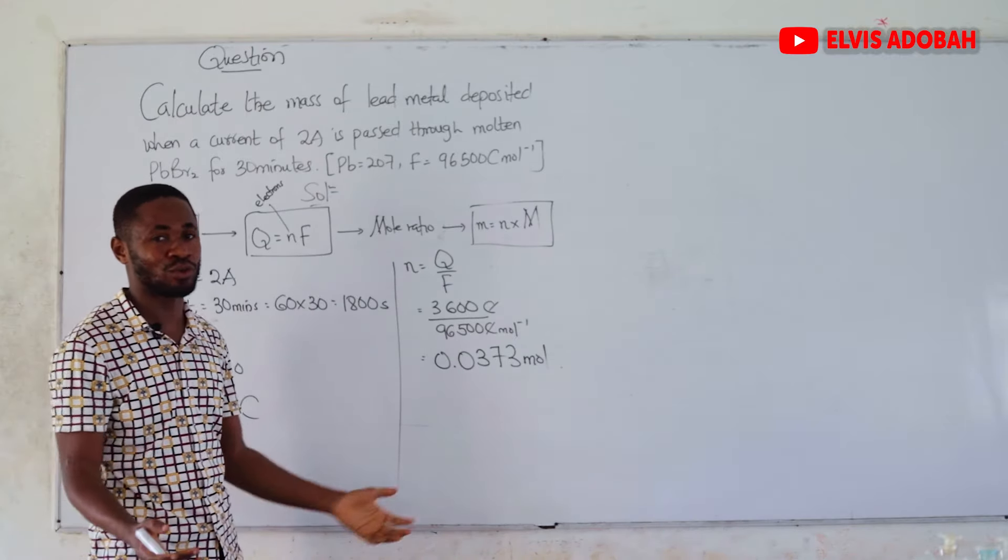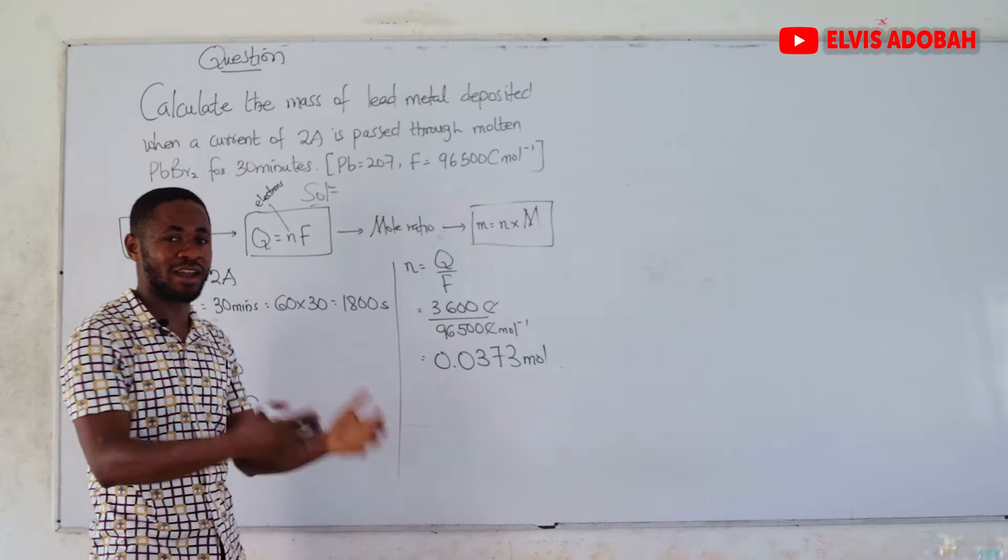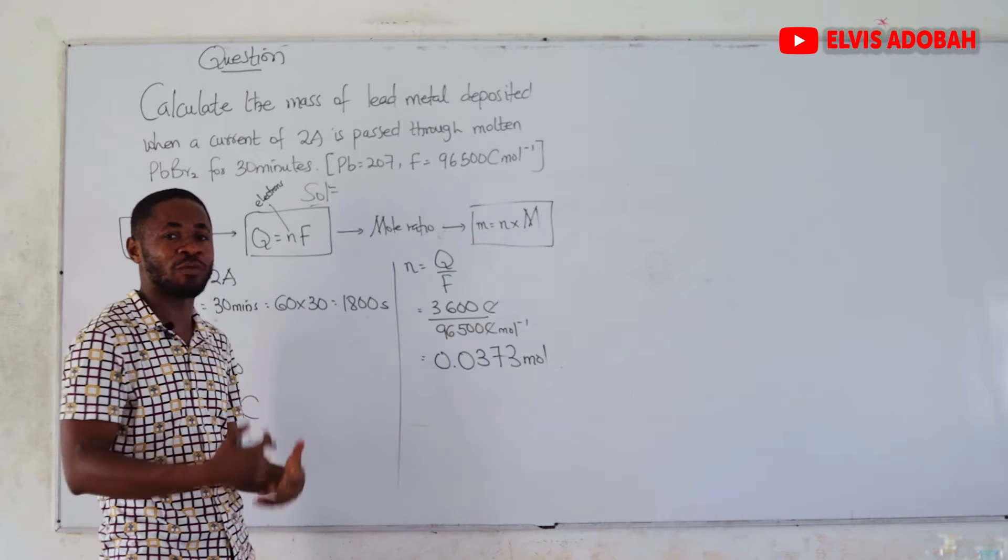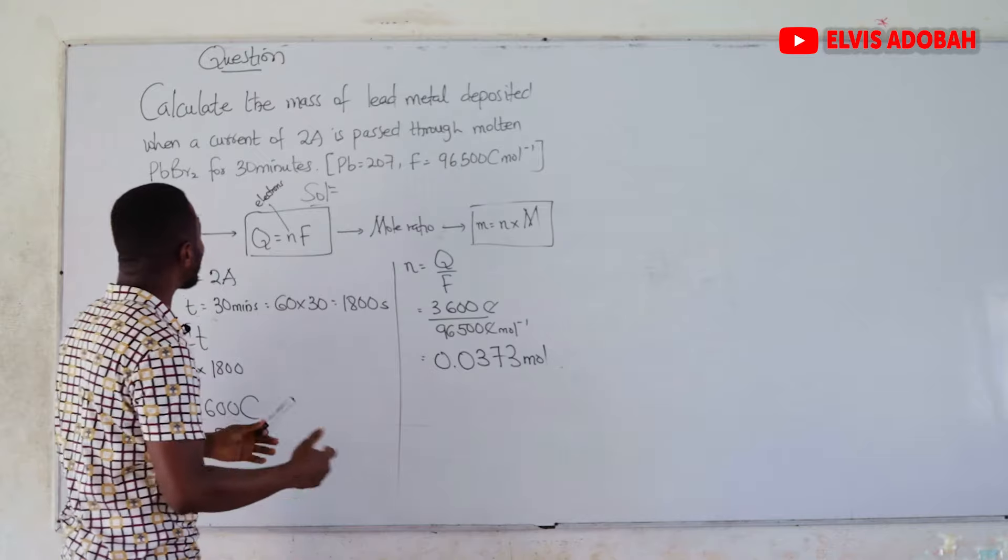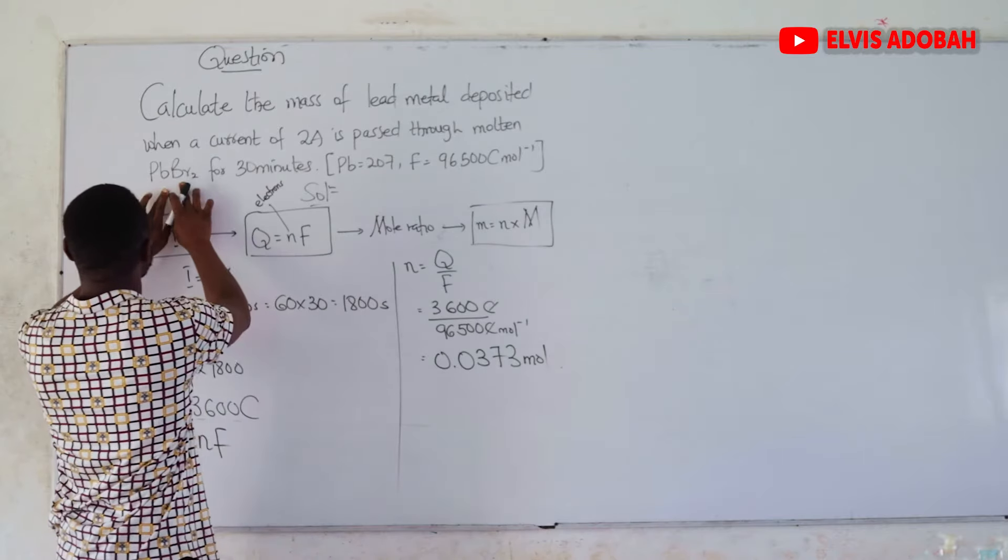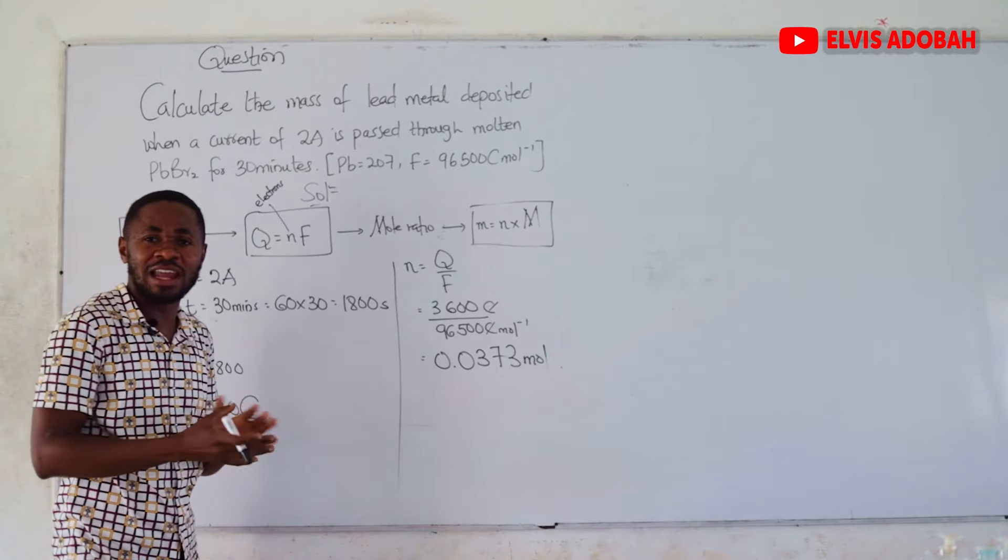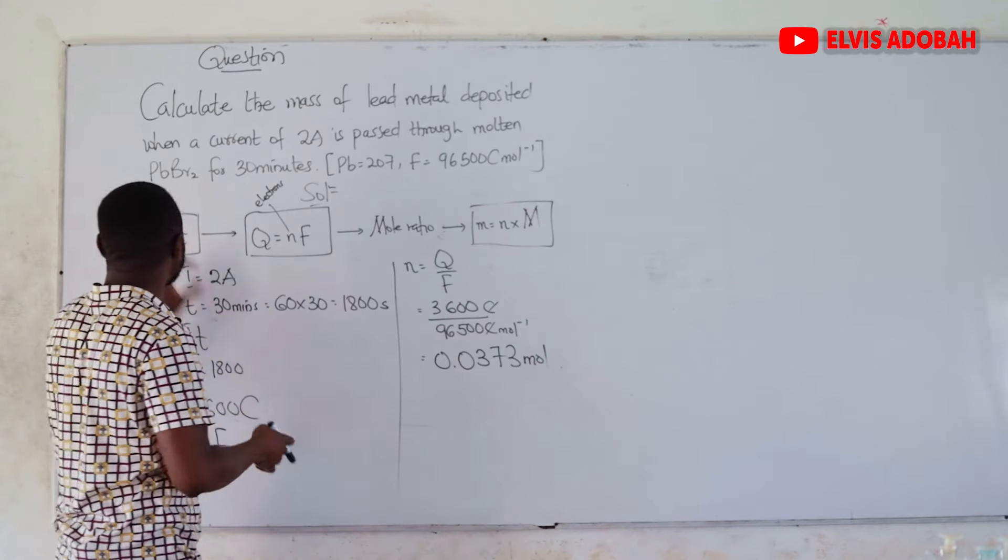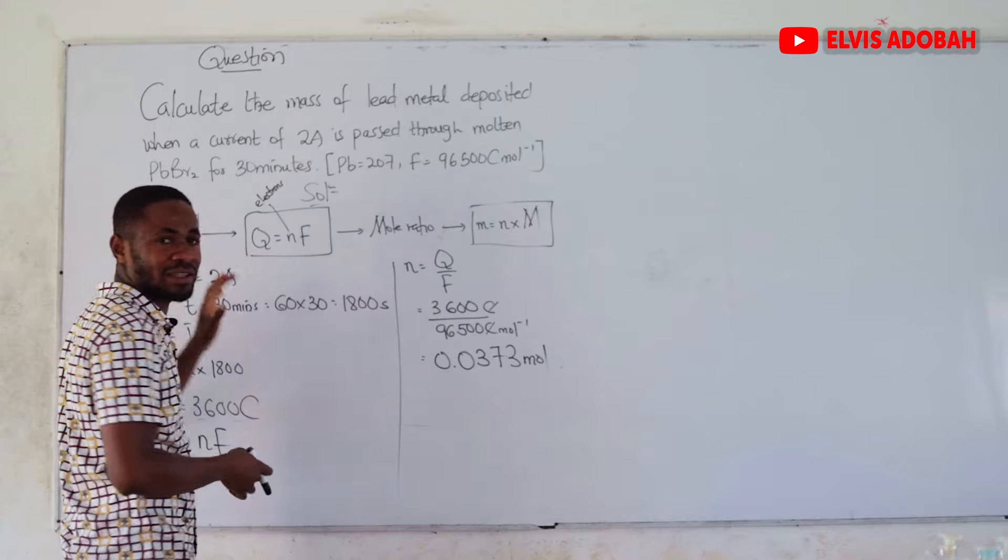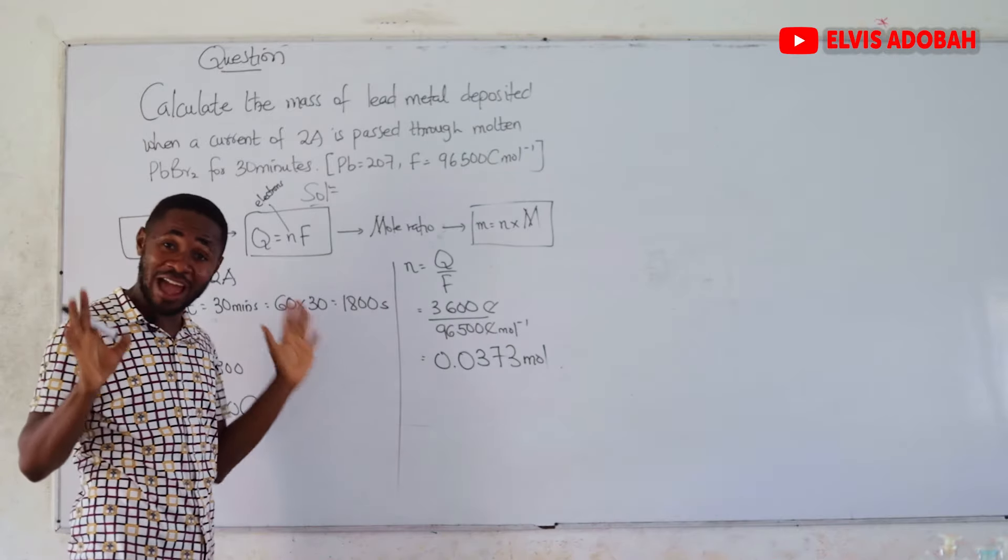Our third step is to use mole ratio. We are looking for the mass of lead metal deposited. This one will actually occur at the cathode. Reduction occurs at the cathode, and reduction is gain of electrons. At the cathode, PbBr2,